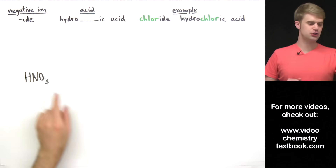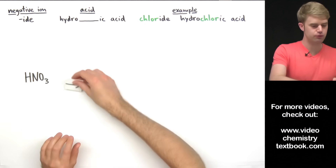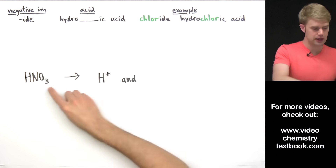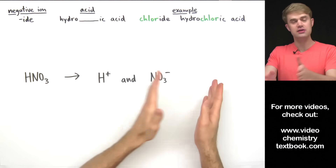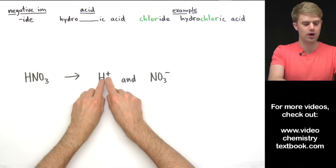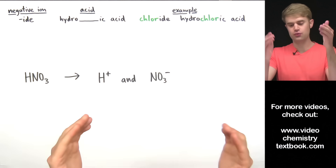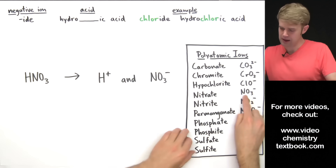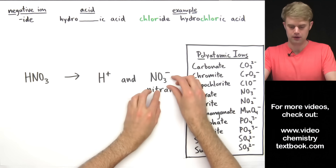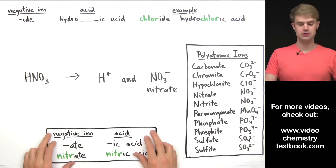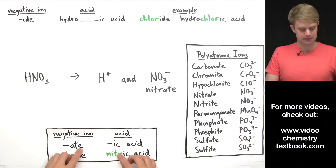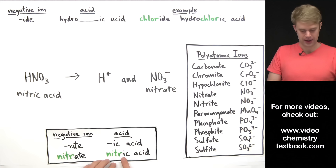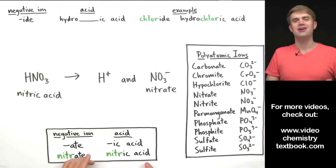Here's our first acid with oxygen: HNO3. We break this up into H+ and NO3- with a 1- charge, balancing the 1+ on the hydrogen. This polyatomic ion NO3- is called nitrate. Since the negative ion ends in -ate, we use this rule: take off the -ate and add -ic. So we go from nitrate to nitric acid.